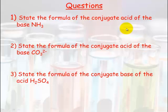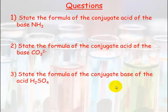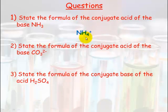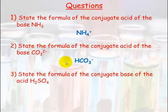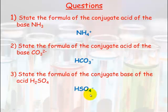Here are three questions for you. Pause and have a go at writing the conjugate acid and conjugate base of these substances — remember, it's the difference of one proton. The answers are: ammonium (NH₄⁺) — an extra hydrogen added; hydrogen carbonate (HCO₃⁻) — an extra hydrogen added. Remember, for the conjugate acid you add a hydrogen. For the conjugate base you do the opposite and take off a hydrogen, giving you HSO₄⁻.